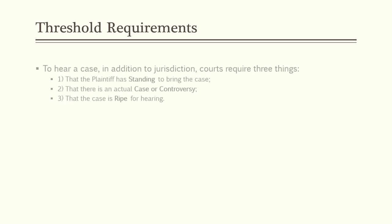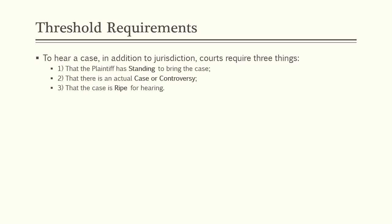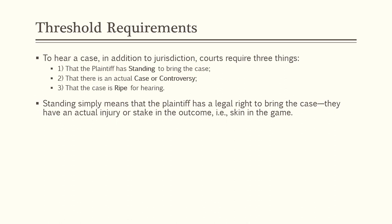Now that we've talked about the federal court structure, let's talk about the threshold requirements for getting into court in the first place. To hear a case, in addition to all the jurisdictional issues we've talked about, courts require three things: that the plaintiff has standing to bring the case, that there is an actual case or controversy, and that the case is ripe for hearing. Standing simply means the plaintiff has a legal right to bring the case — they have an actual injury or stake in the outcome, i.e., they have skin in the game.